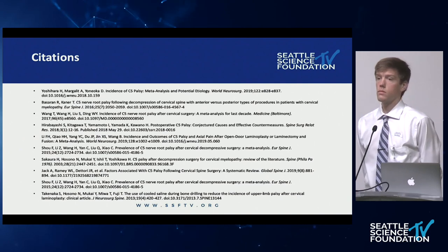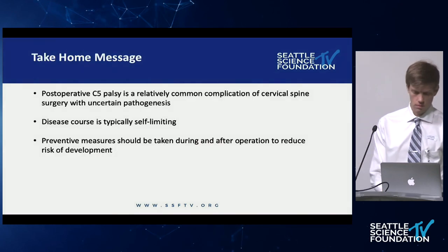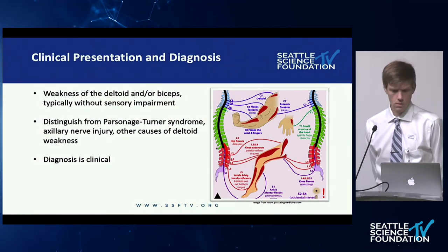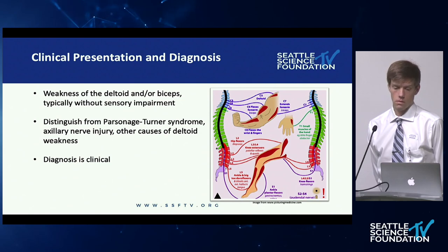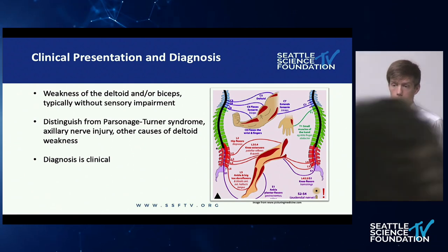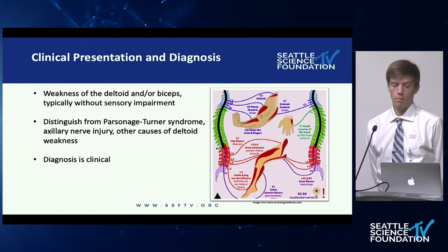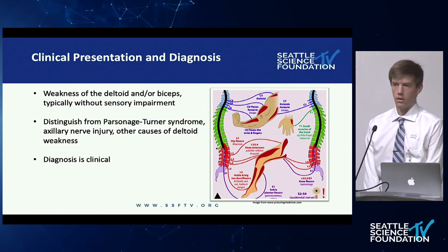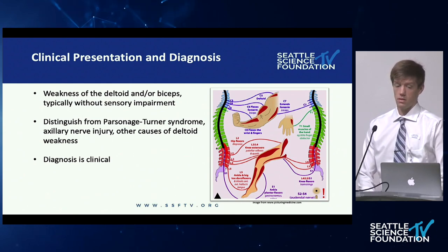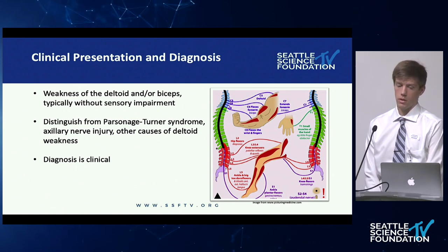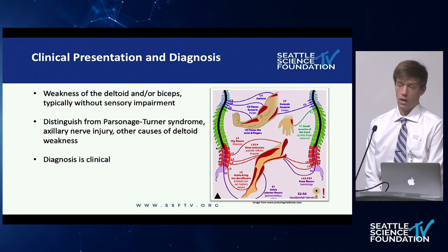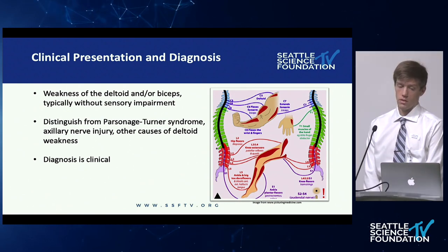Regarding the three clinical syndromes: Parsonage-Turner syndrome is a syndrome of unclear cause, likely autoimmune, that affects the superior brachial plexus — most typically presenting with weakness of the rotator cuff, can include the deltoid, and often has sensory deficits. Axillary nerve injury often follows shoulder injury such as dislocation, and most often presents with sensory deficits as well.